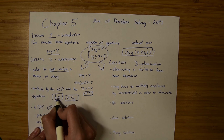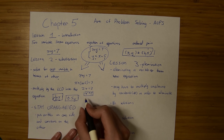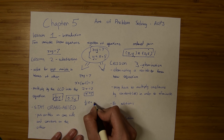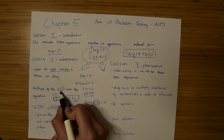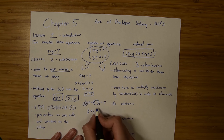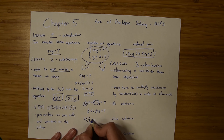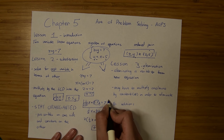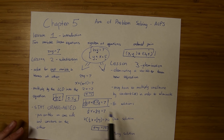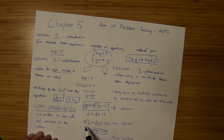For example, if you have one-half x in an equation like one-half x plus 0.5y equals 7, and you don't like the fractions or decimals, you can multiply by the least common denominator, which in this case is 2. First turn them into fractions, then multiply both sides by the least common denominator. Be sure to balance it out. The most important thing in substitution is staying organized, which is important throughout all of chapter 5 as things get more complicated.